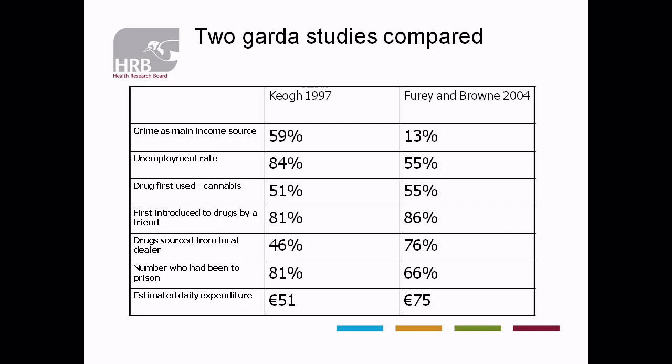Drug sourced from a local dealer had increased from 46% to 76%, and what that tells me is that drug markets are far more integrated into local communities. We must also remember that the mobile phone became widespread — anyone with a mobile phone and a list of names can be a drug dealer, and they're very difficult to detect from a policing perspective. So easier access to drugs was also facilitated by the mobile phone. The number had been to prison had decreased slightly, and the estimated daily expenditure, not allowing for inflation, wasn't that different.